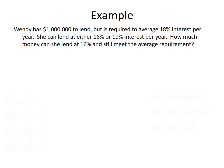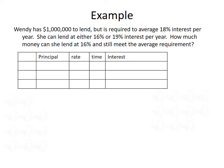Our example is as follows. First we want to read through the entire problem. Wendy has $1 million to lend, but is required to average 18% interest per year. She can lend at either 16% or 19% interest per year. How much money can she lend at the 16% level and still meet the average requirement? In order to organize the information for our problem, let's create a table.